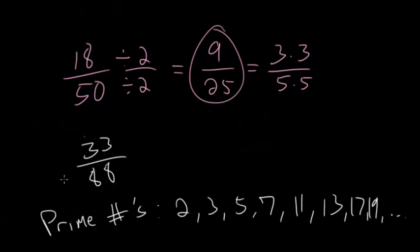So we can just start going through the list here. 2 only goes into 88. It doesn't go into 33. And then to tell if something's divisible by 3, you essentially just add the digits.